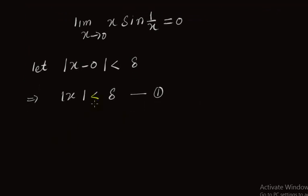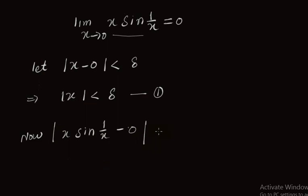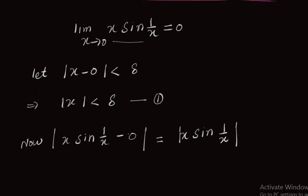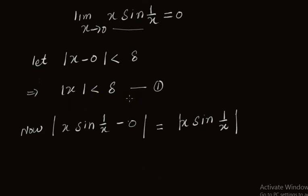Now we find |f(x) - L|. Our function f(x) is x·sin(1/x), and L is 0, so |f(x) - L| equals |x·sin(1/x) - 0|, which equals |x·sin(1/x)|. We now try to find a relation between delta and epsilon.